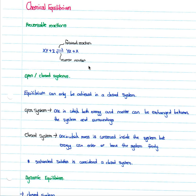An important concept for this section is the difference between an open and a closed system. Chemical equilibrium can only be achieved in a closed system. An open system is one in which both energy and matter can be exchanged between the system and its surroundings, whereas a closed system is one in which mass is conserved inside the system but energy can enter or leave freely. Chemical equilibrium requires mass to be conserved — no loss or gain in mass — though energy can enter or leave freely.